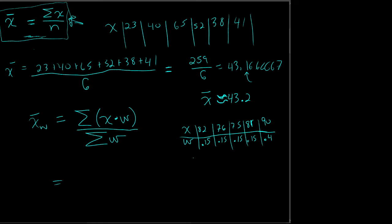I want to do the sum of these multiplied together divided by the total of the weights. I tend to add my weights up first: 15 plus 15 is 30, 30 plus 15 is 45, plus another 15 is 60, plus 40 is 100 — or 1.0. So on the calculator you get 0.15, 0.3, 0.45, 0.6, and then 1. The sum of my weights is going to be 1.